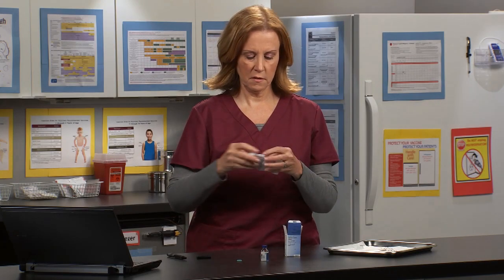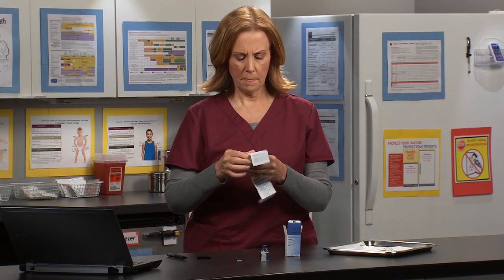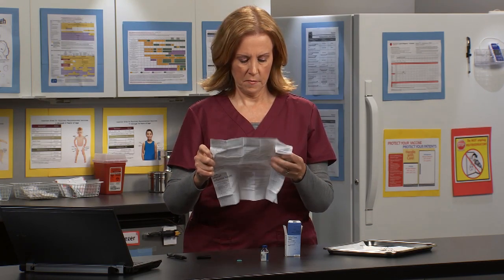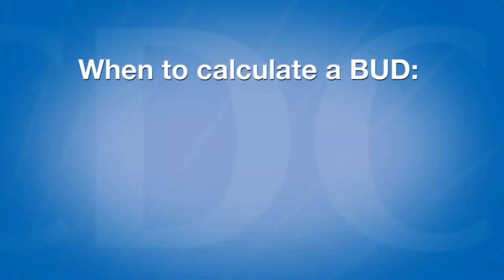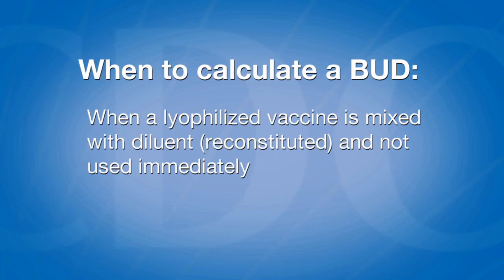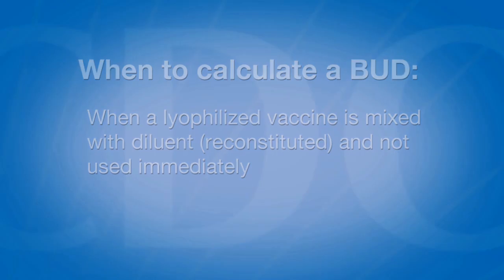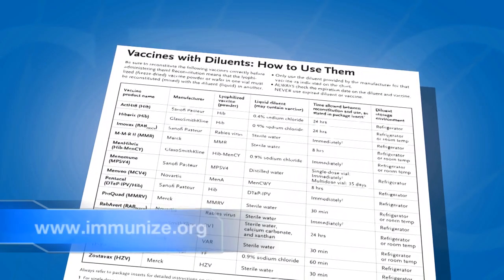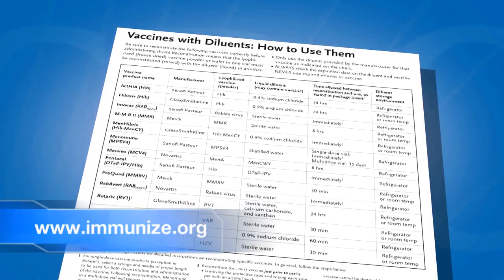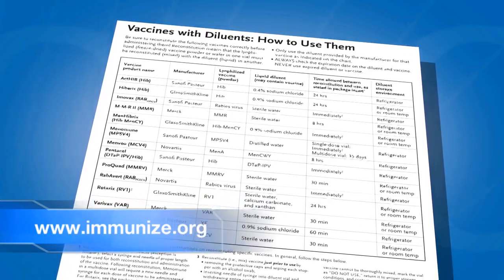Information about the BUD can be found in the manufacturer's product information. Providers may encounter instances when a BUD will need to be calculated. The first is when a lyophilized vaccine is mixed with its diluent, or reconstituted, and then not used immediately. For example, a patient or parent refuses vaccine after it is prepared. The Immunization Action Coalition, or IAC, has a table summarizing the BUD for lyophilized vaccines and their diluents.